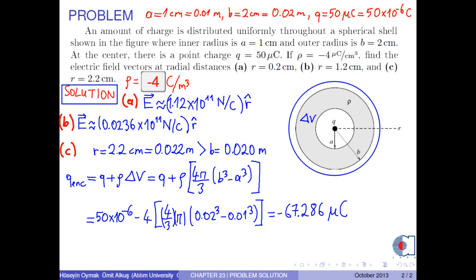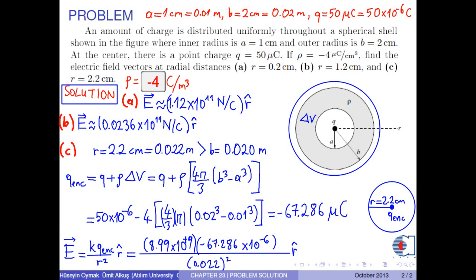According to the shell theorem, this charge can be considered as if it were concentrated at the center. The electric field is calculated by the formula K times Q enclosed over R squared R-hat. With the numerical values, we obtain the electric field at R equals 2.2 cm as approximately negative 0.0125 times 10 to the 11 N per coulomb R-hat. It can be shown in the figure as follows, because it is in the negative R-hat direction.